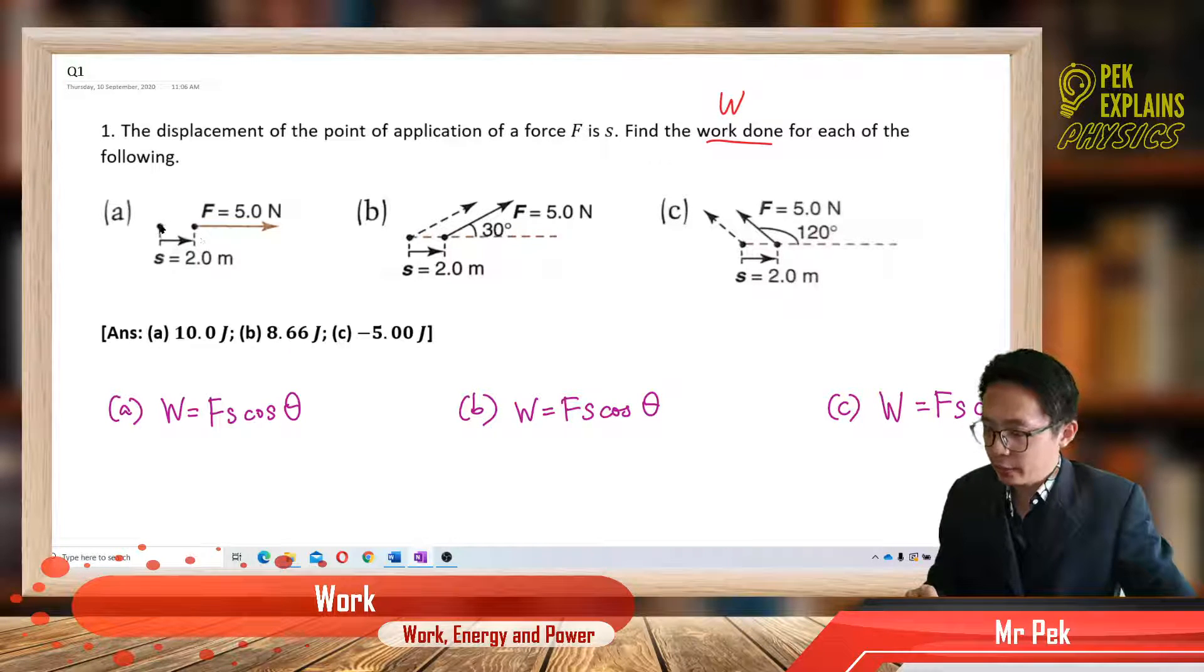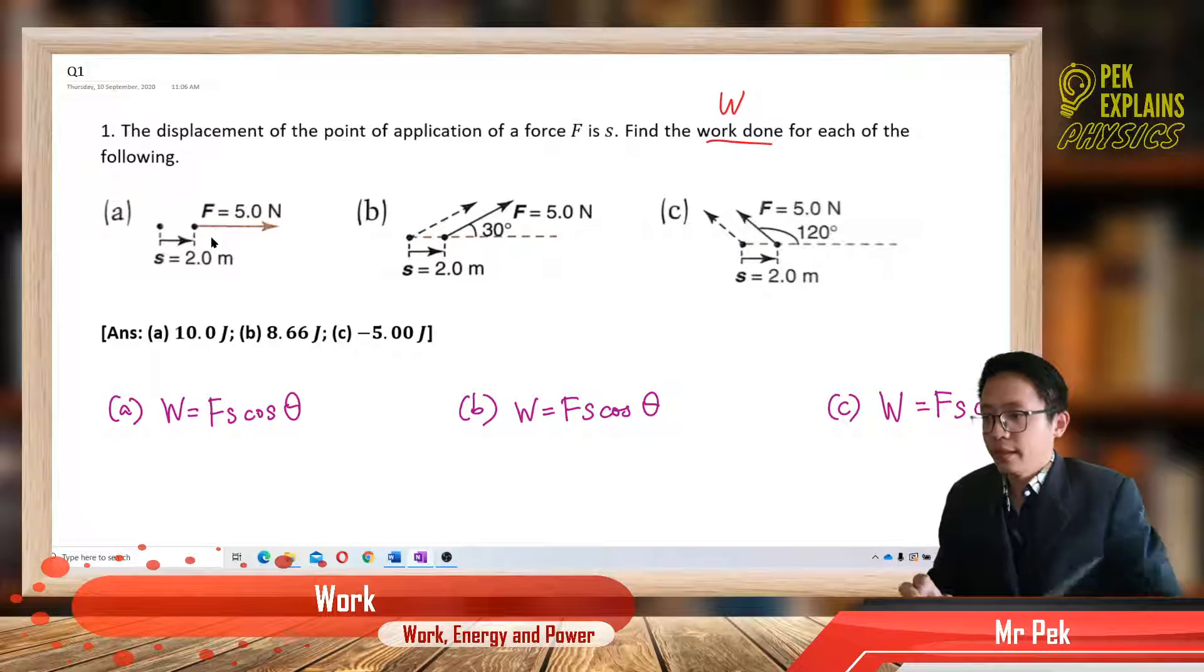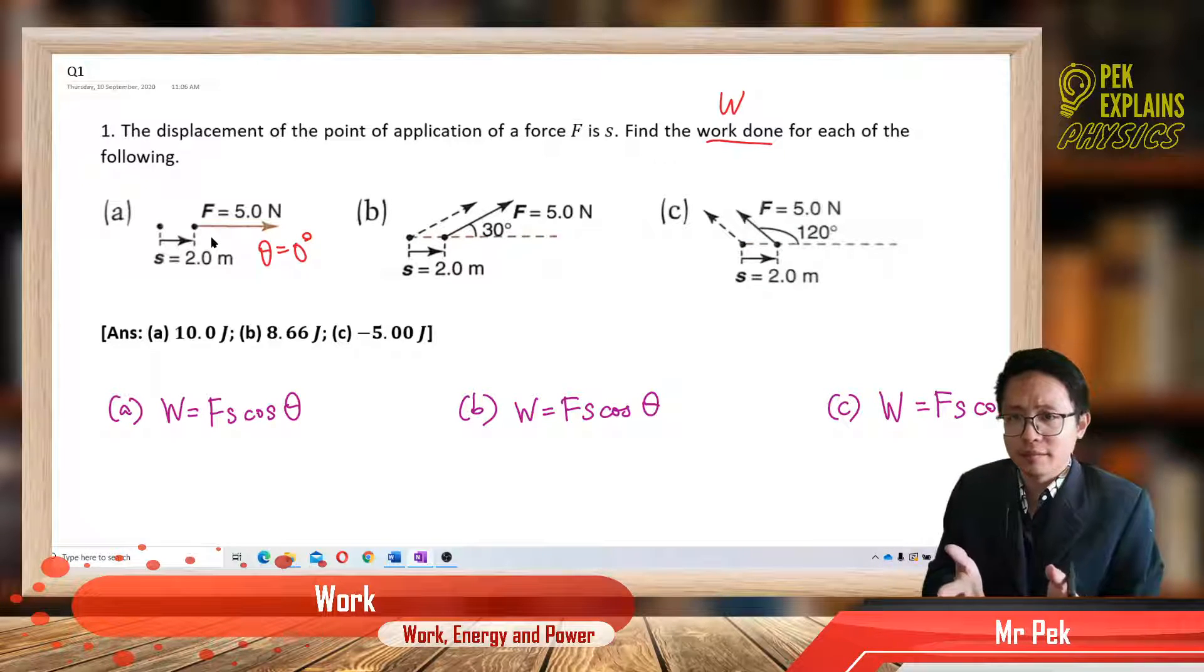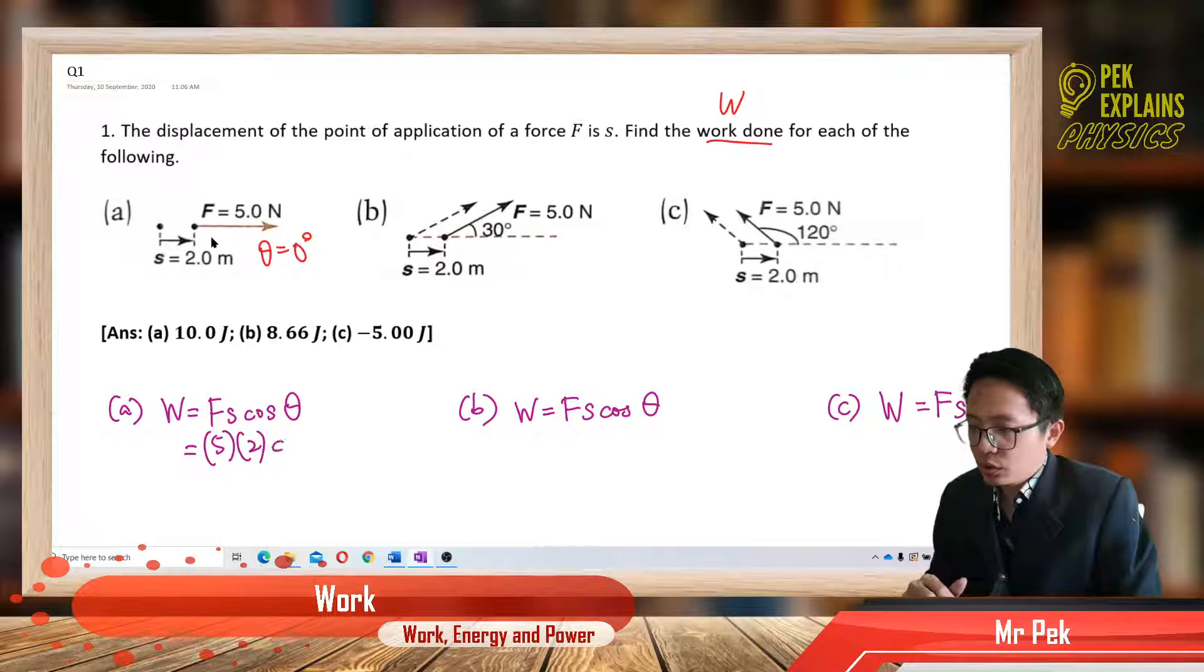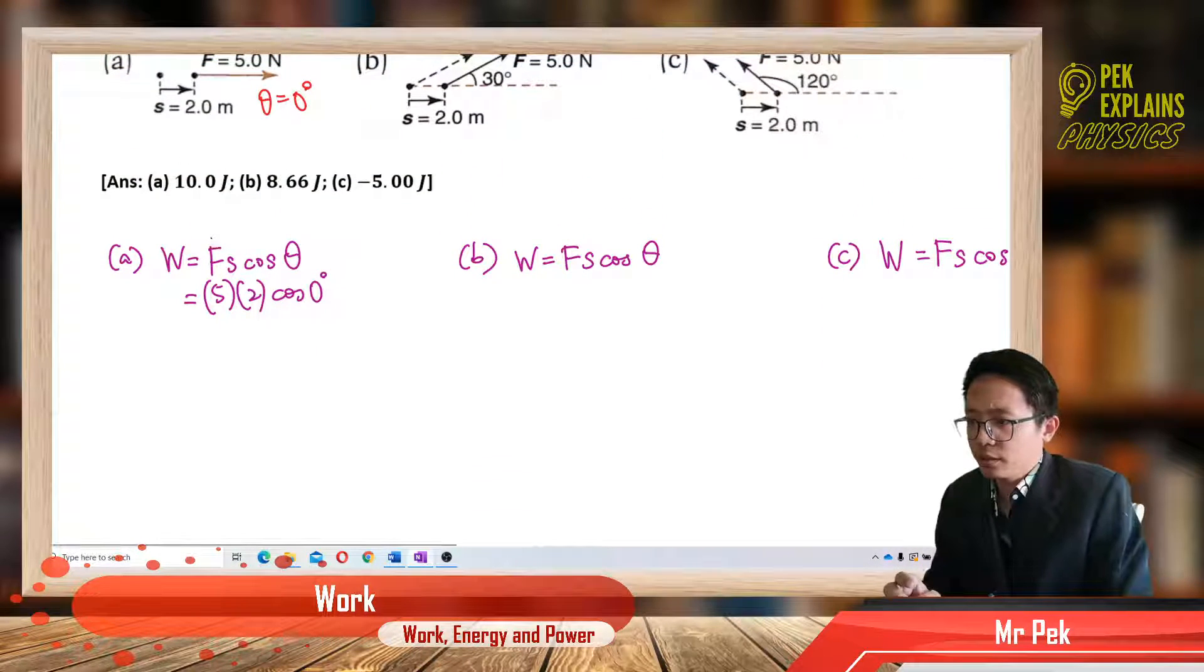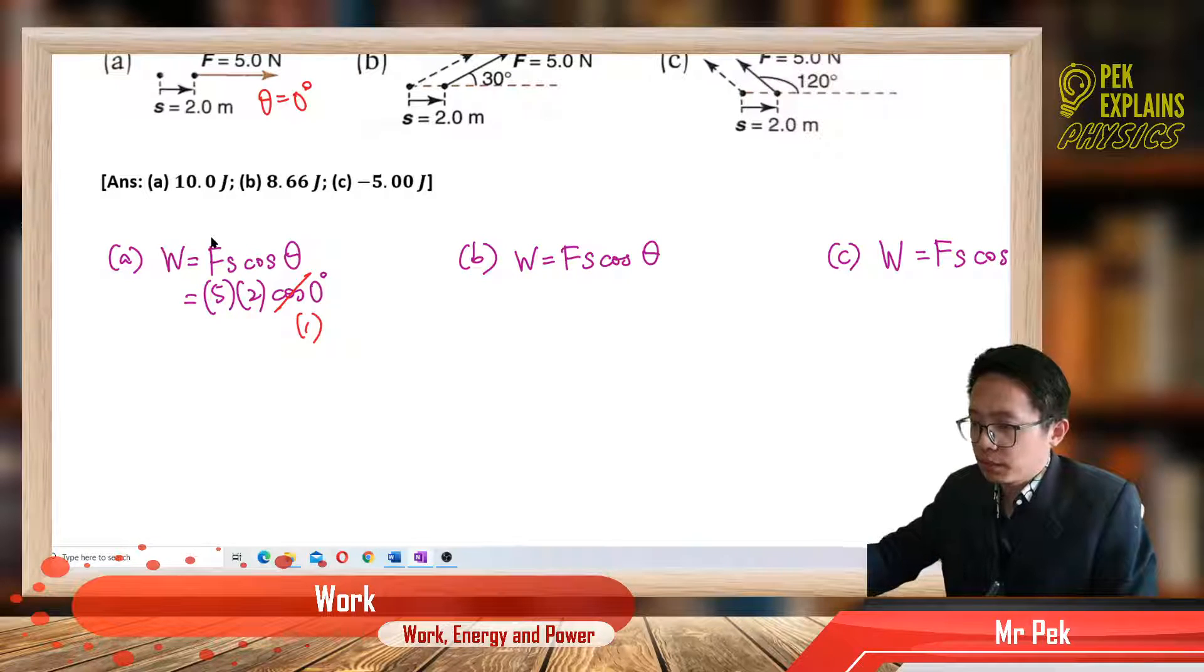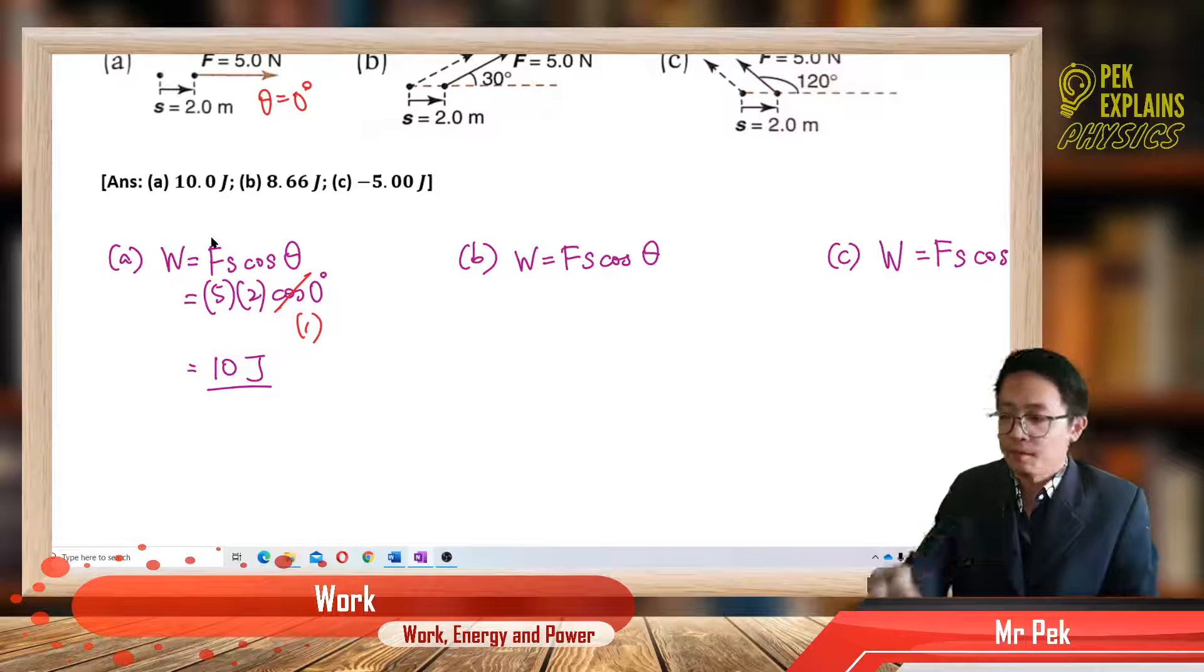For the first one, we just use the formula, work done equal to F S cos theta. What is the angle between this force and displacement? The angle between them is zero degree because they are parallel to each other. Same direction. So it is 5 times 2 cos 0 degree. Cos 0 is equal to 1, so we get 10 J.